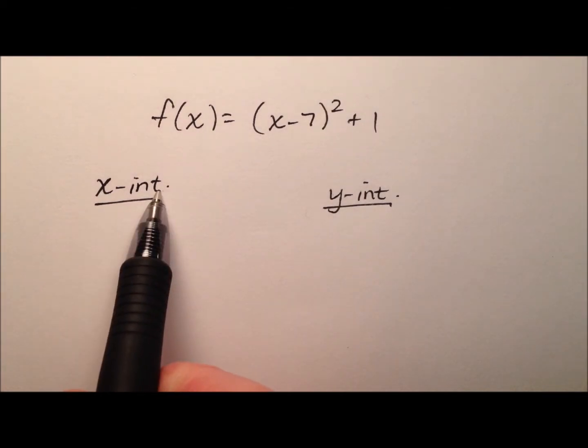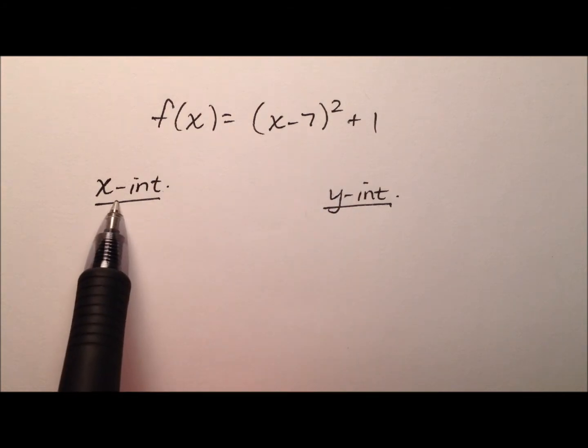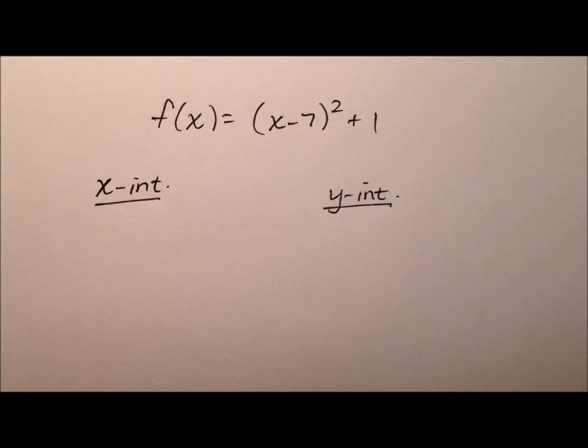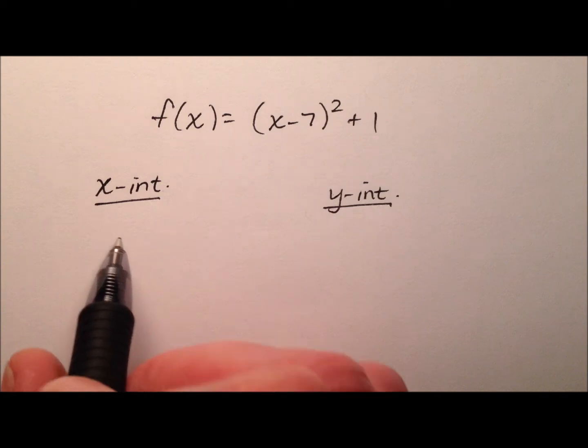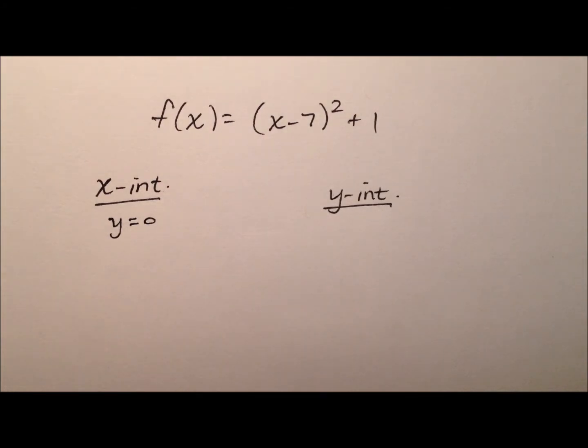Alright, so we'll start with the x-intercept, or x-intercepts. Remember with a quadratic function we could have either 0, 1, or 2, so let's see what it might be. We know that we can find the x-intercepts by plugging in 0 for y and then solving the equation for x.